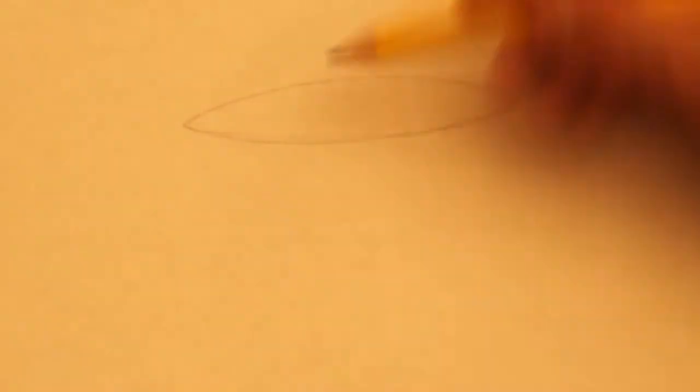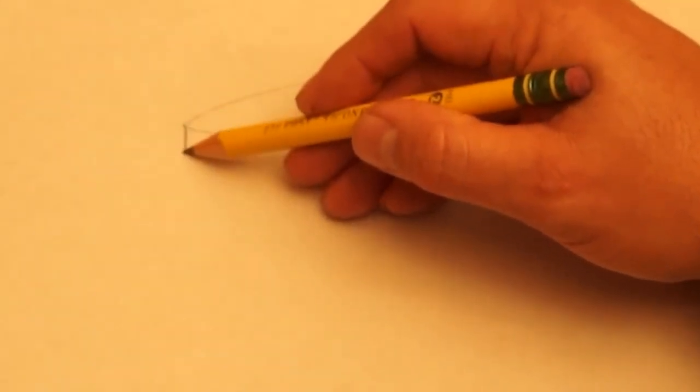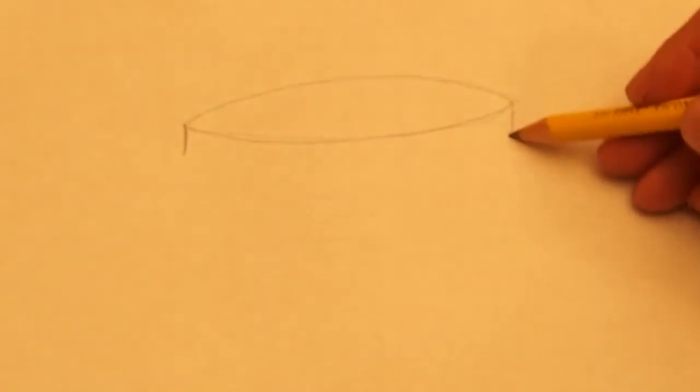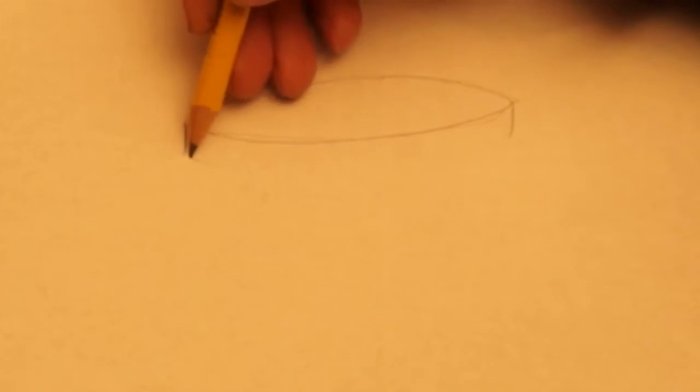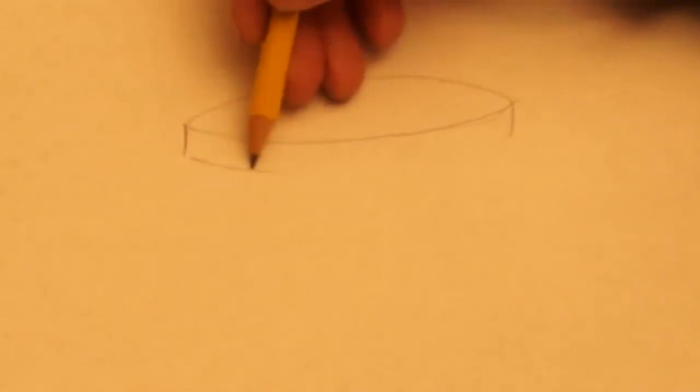Now this basket itself has a rim around it. I'm going to draw two short lines that come down from the top. And then a curve that matches or is parallel with this curve up here at the top. It follows the same direction and has the same curve to it.